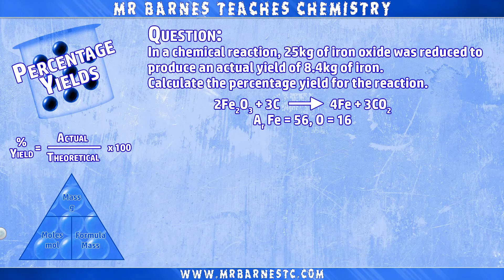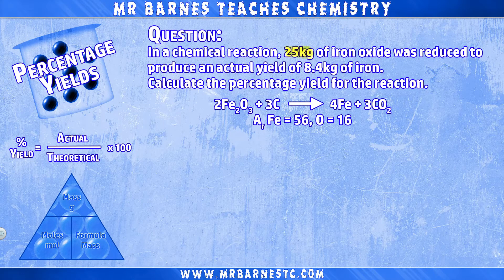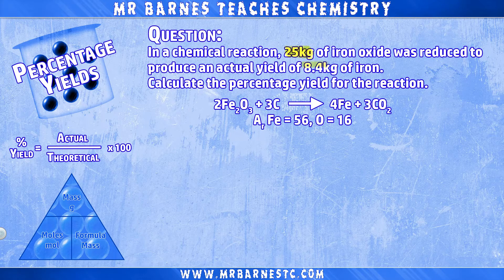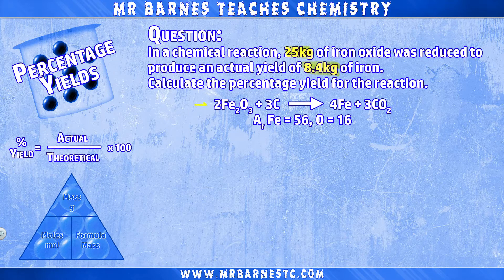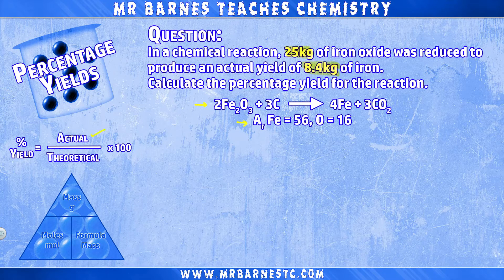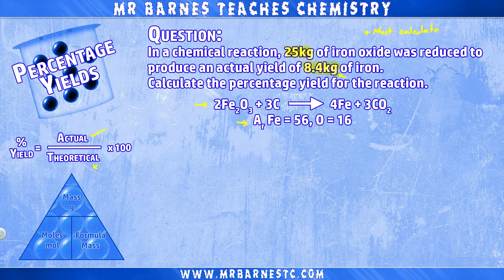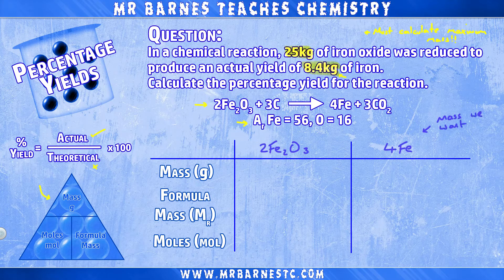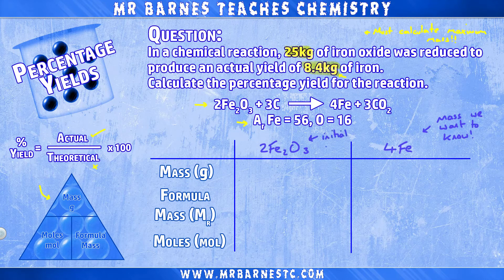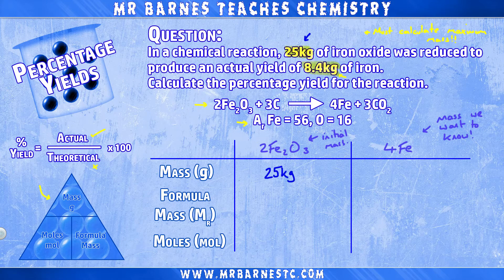This states that in a chemical reaction, 25kg of iron oxide was reduced to produce an actual yield of 8.4kg of iron. Calculate the percentage yield for the reaction. You've also been given the balanced equation and the atomic masses. Now you can hopefully see that we've been given the actual yield, but no theoretical yield. We've got to work it out, and that's where this triangle comes in at the bottom left. So we've been given information on iron oxide, and we want to know the theoretical yield for iron. We have an initial mass of 25kg for iron oxide, so we can add that in here.